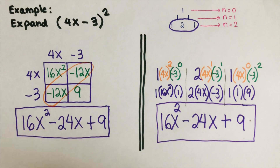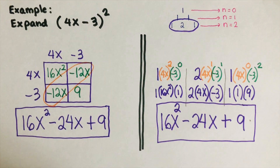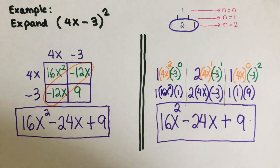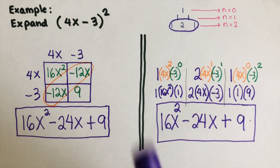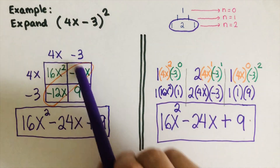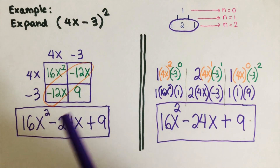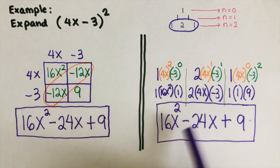Some might ask why use Pascal's triangle if we can use the area model. Pascal discovered this triangle to make math faster. For example, with an exponent of 10, doing the area model repeatedly would be a lot of work — that's why Pascal's triangle was developed.